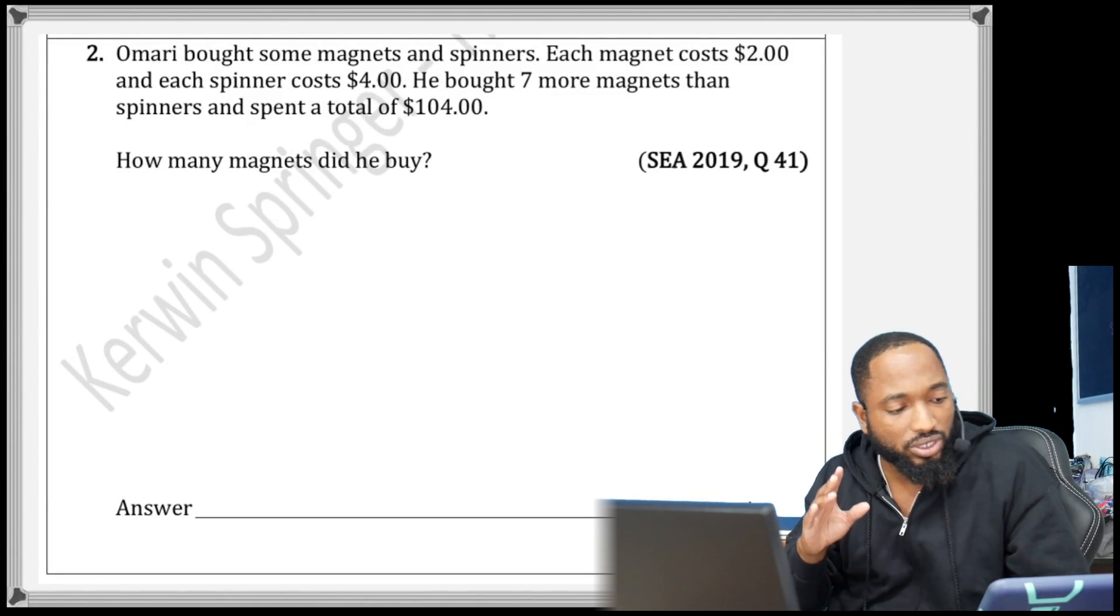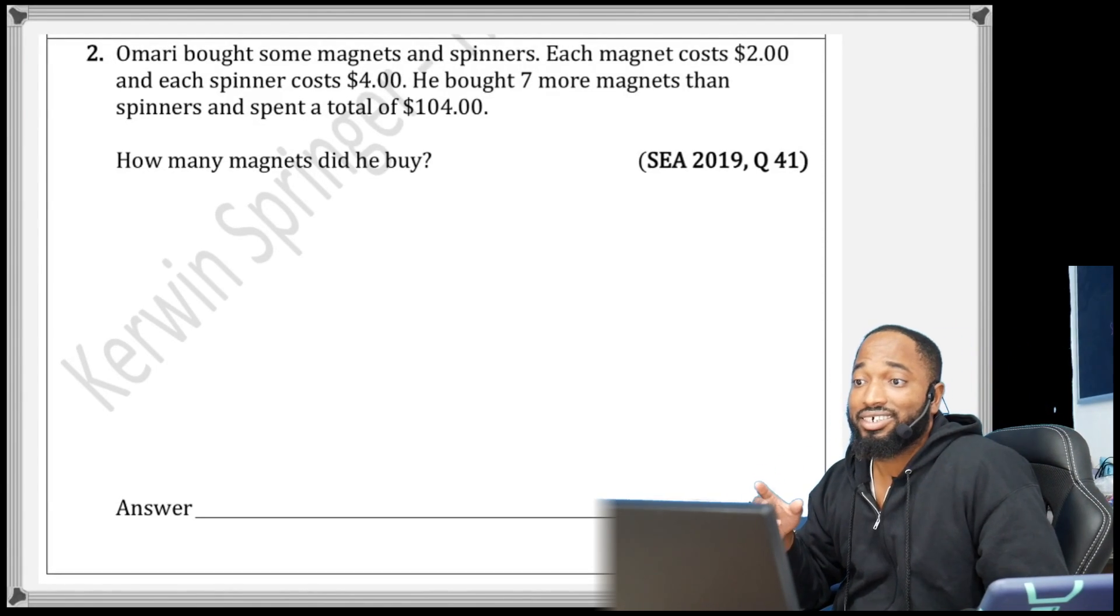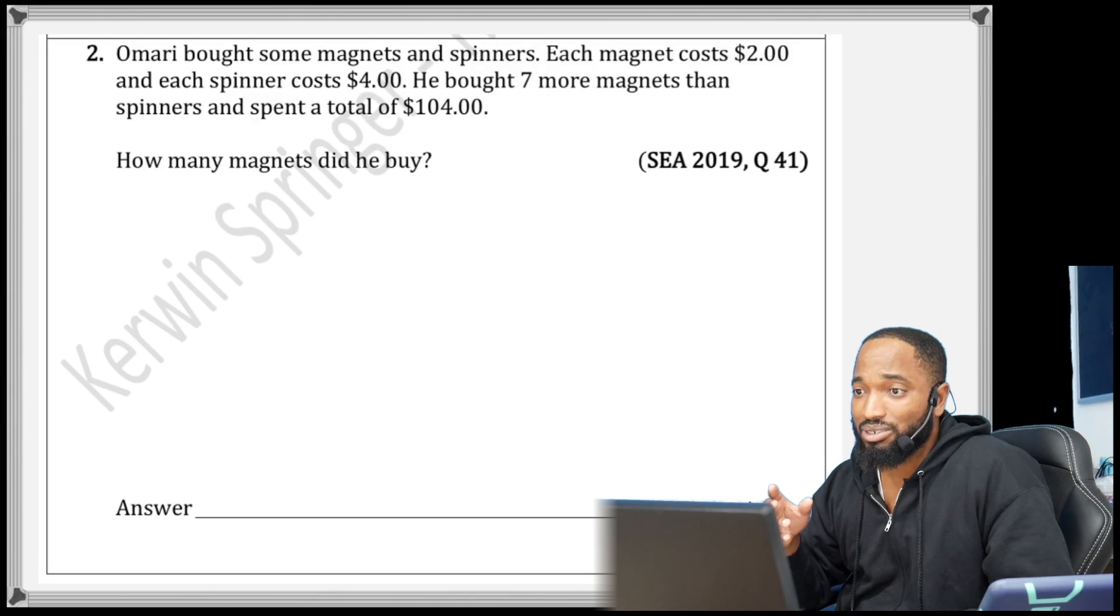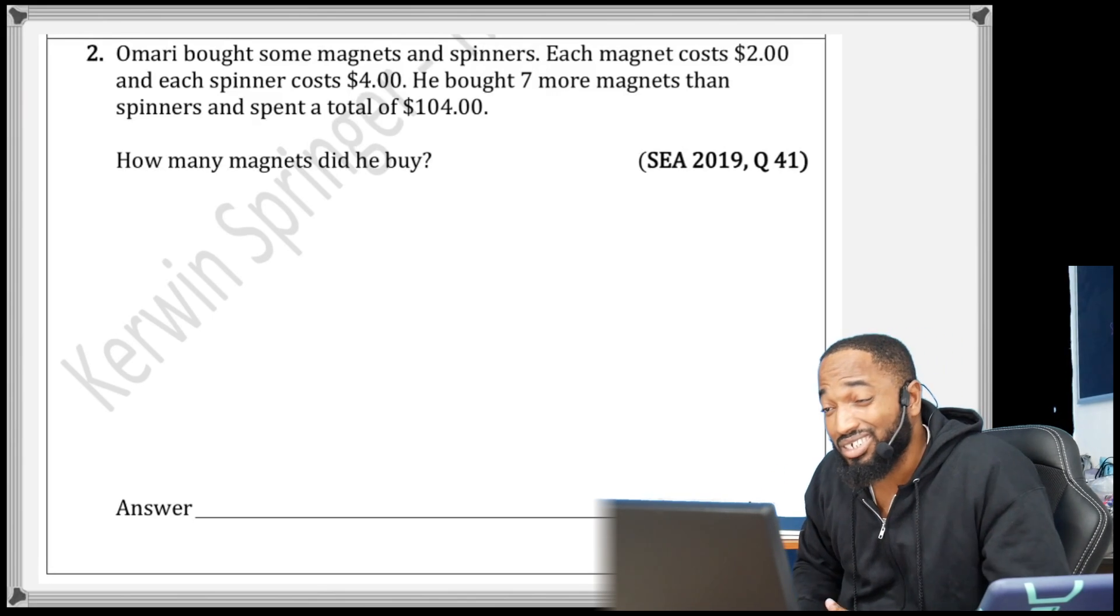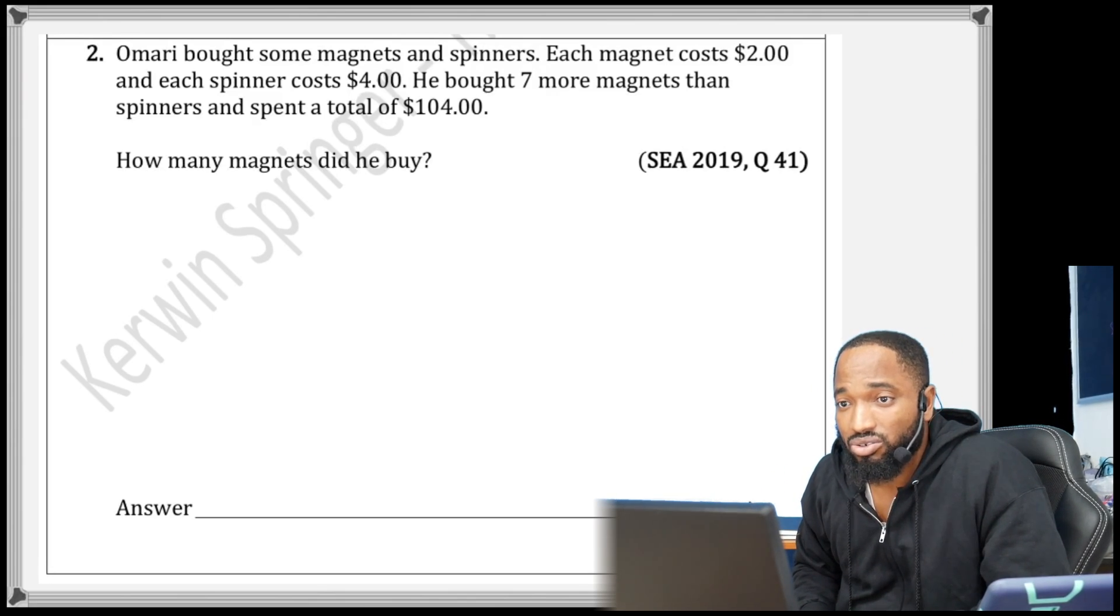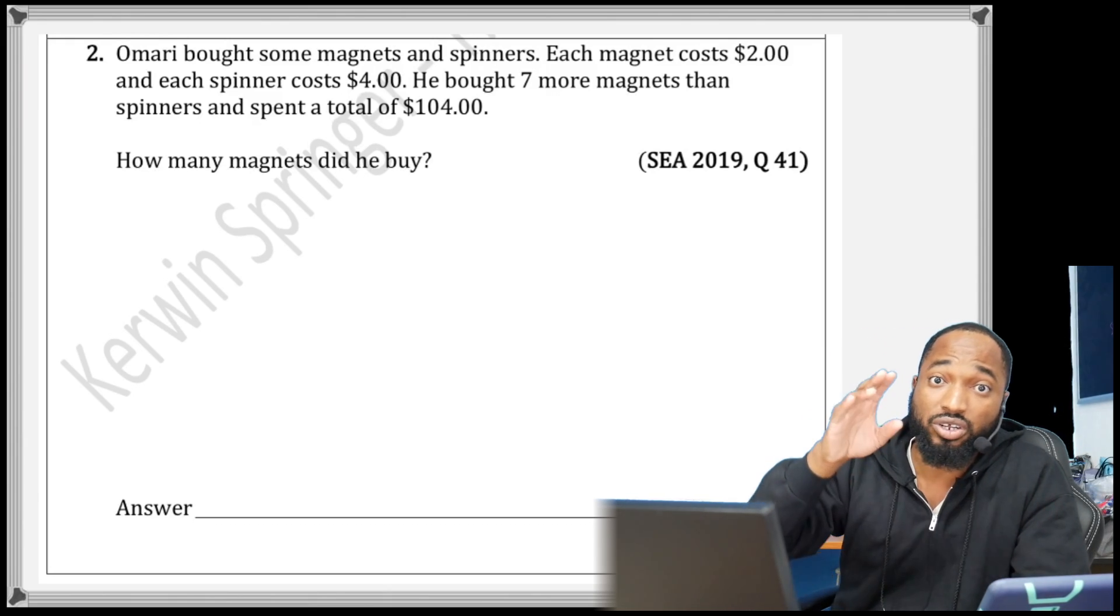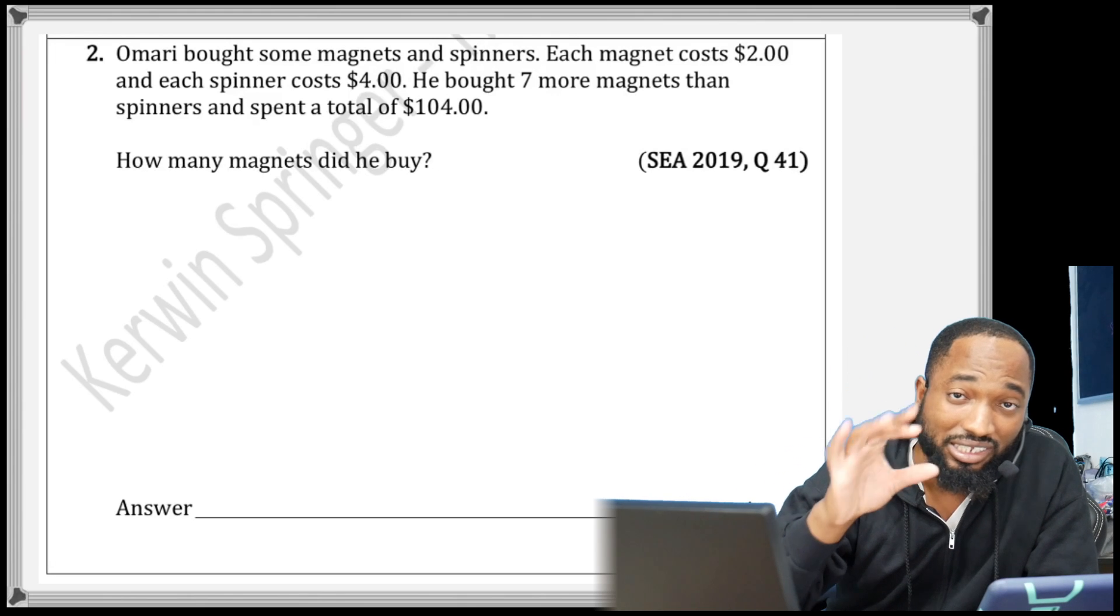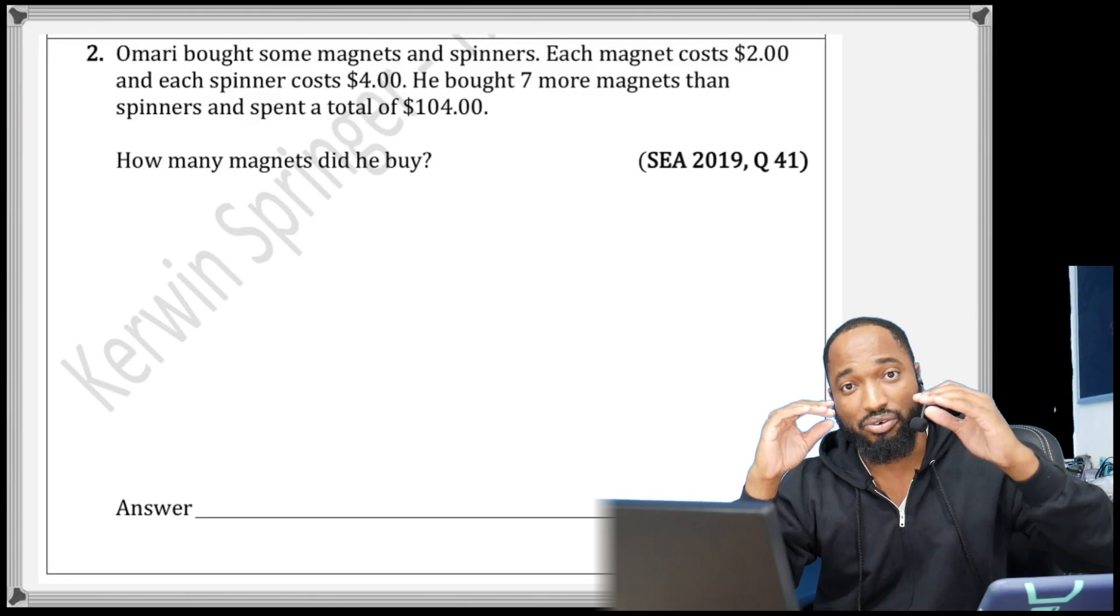Now let's look at the one that came last year. Omari bought some magnets and spinners. A lot of people get problems with this. Each magnet costs $2 and each spinner costs $4. He bought 7 more magnets than spinners and spent a total of $104.